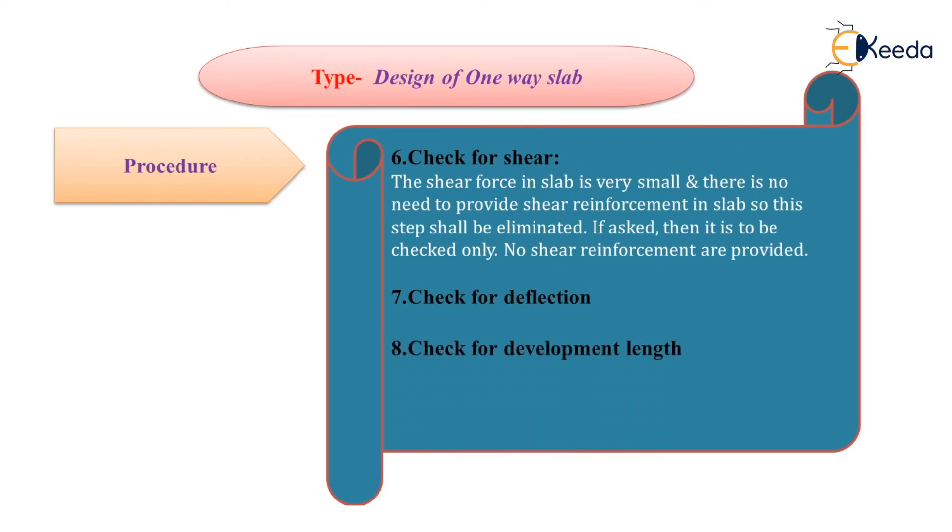Next and last step is to check for development length. IS code recommends that the value of MU1 upon V plus L0 should not be less than the development length. Here we will take MU1 as half the value of bending moment, that is MU divided by 2.